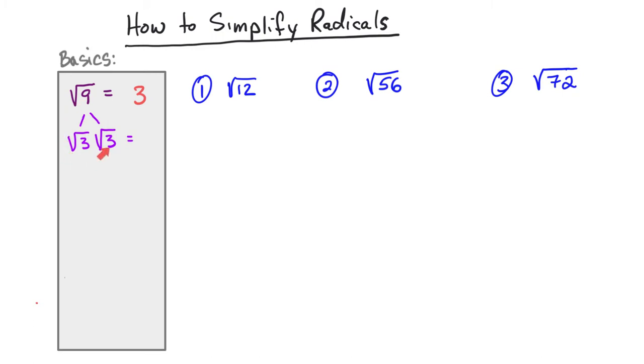So if I have the square root of 3 and the square root of 3, which you hopefully notice are matching the exact same number, the answer is going to equal 3.